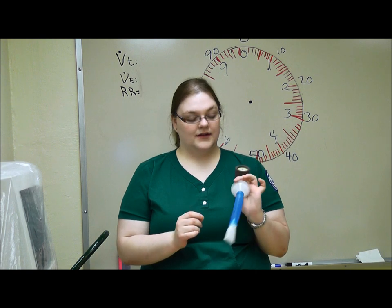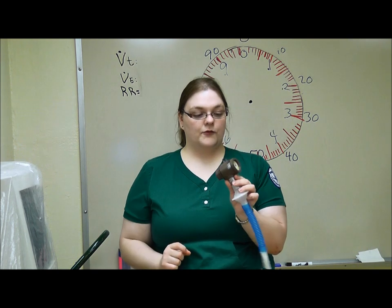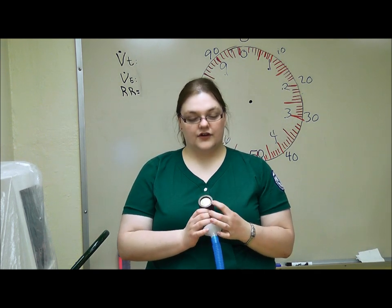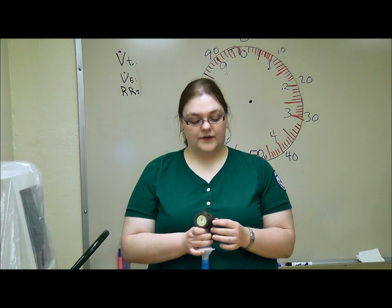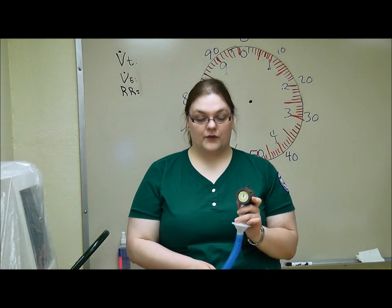The first step in reading a Wright spirometer is actually getting a reading. To do that, you're going to turn on the Wright spirometer with the power button over here on this model, and you're going to make sure that the dial is set to zero. You push the button over here. In that manner, it's very similar to a stopwatch.